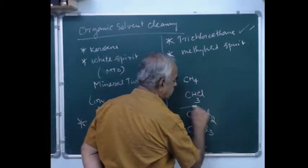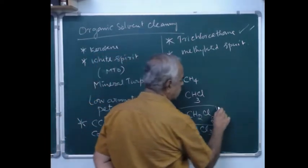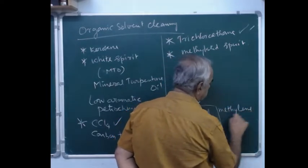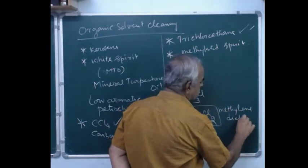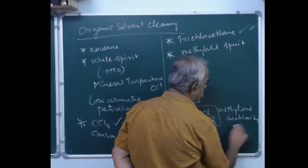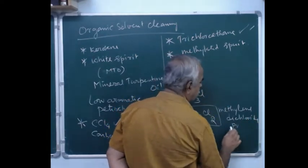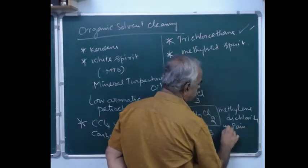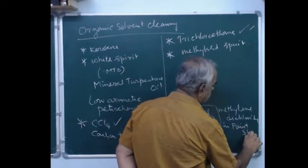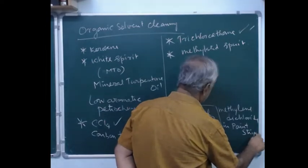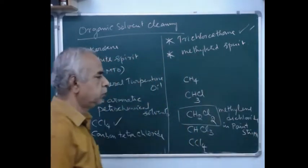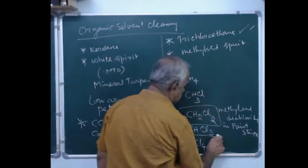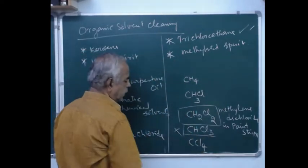Methylene dichloride is very useful in paint varnish remover — that is, paint stripper — so it is a very good solvent in paint stripping solution. Whereas chloroform, as you know, is an anesthetic, so we are not using that here.